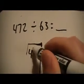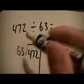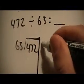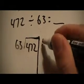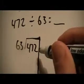So what we do is say okay, 472 is the total of whatever I have and I'm dividing by 63. So here is where I'm going to be putting the factors that I'm going to multiply by 63 to get as close as I can to 472.